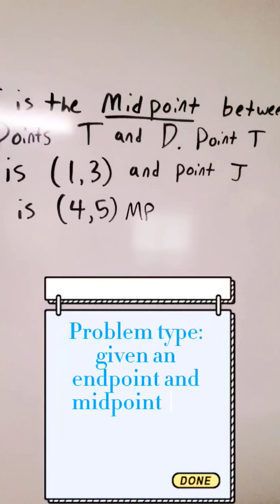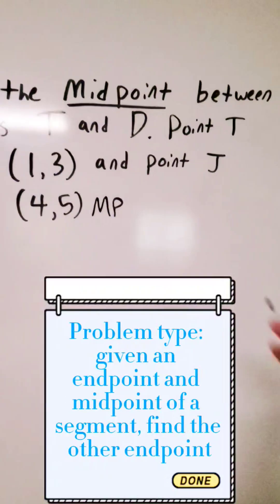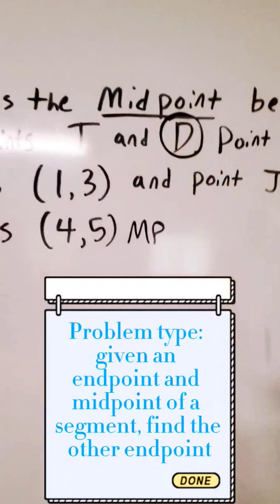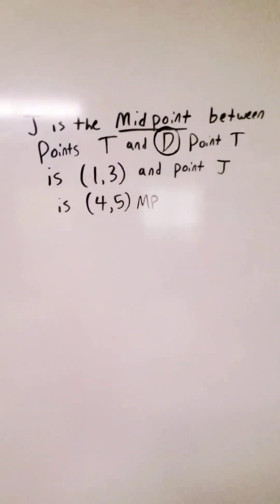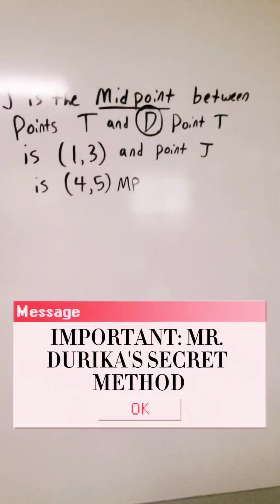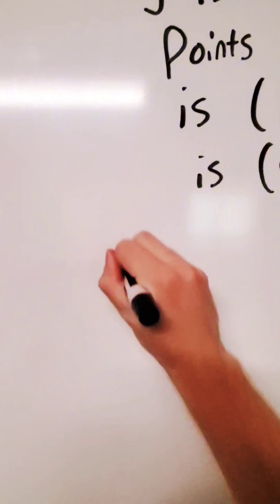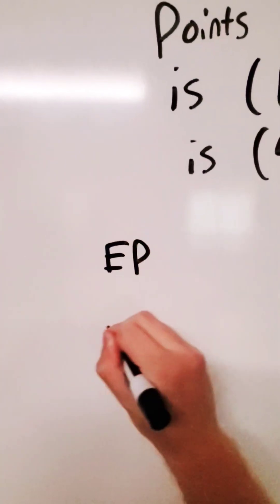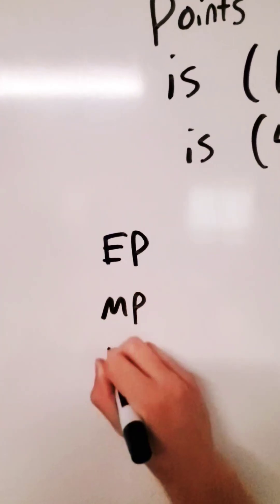So how are we going to do this? How are we going to solve for the other endpoint? We don't know what D is yet. So this is one of my favorite secret methods. All you are going to do is set up a problem where the endpoint goes on top, midpoint, endpoint.